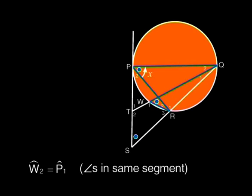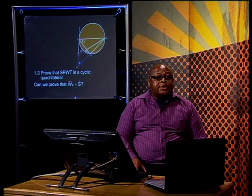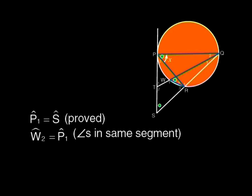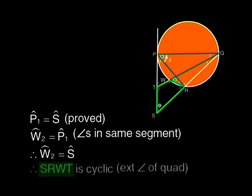Can you see that W2 equals P1? Yes — these are angles in the same segment subtended by QR. So here is your proof: P1 equals S (already proved). W2 equals P1 because of angles in the same segment, and so W2 equals S. Therefore SRWT is cyclic because W2 is the exterior angle equal to the interior opposite angle S.